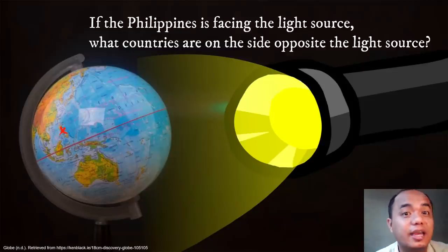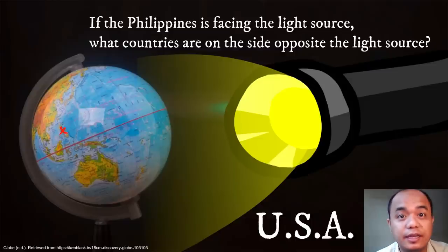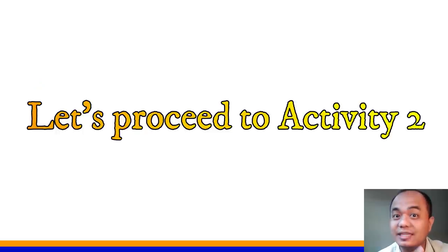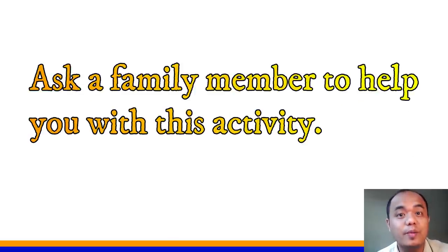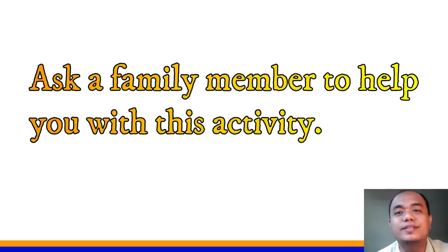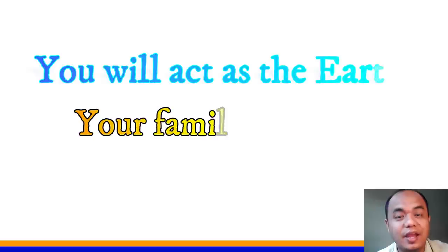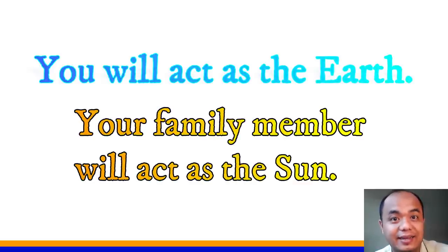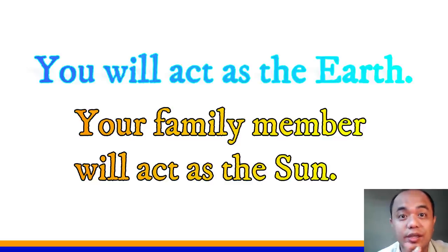The United States of America — specifically North America — and Canada are on the opposite side. Now let's have Activity 2. This time, you need a family member to help you. This activity will show us how the Earth rotates and revolves. You will act as the Earth, and your family member will act as the Sun.